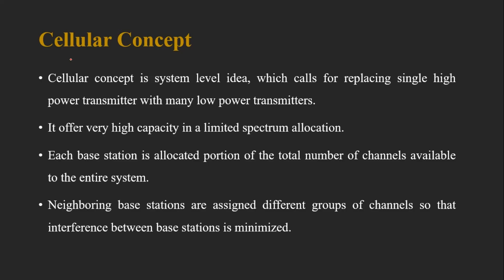The cellular concept is a system-level idea which calls for replacing a single high-power transmitter with many low-power transmitters. In the case of 1G, there was only a single large base station or mobile tower covering a lot of users, but as the number of users increased, it became difficult for a single high-power transmitter to serve them all.